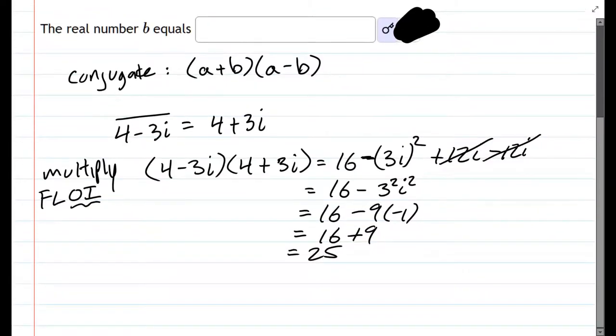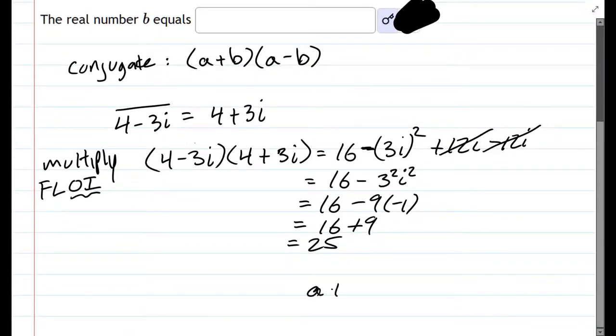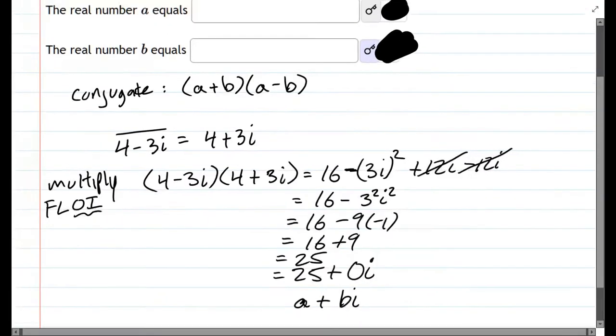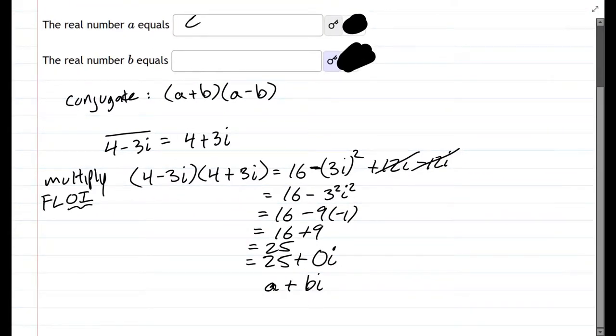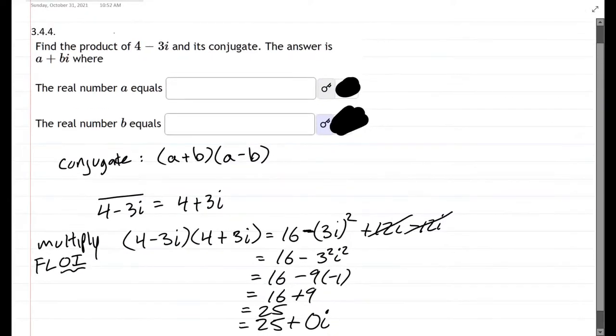Now they want it in a plus bi form. There's no b part right here, but we can still write it like that. 25 is a. There's 0i. So then a is 25 and b is 0. We'll check our answers. There we go.